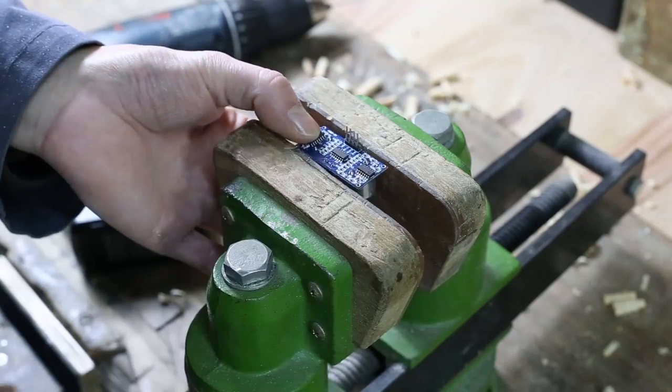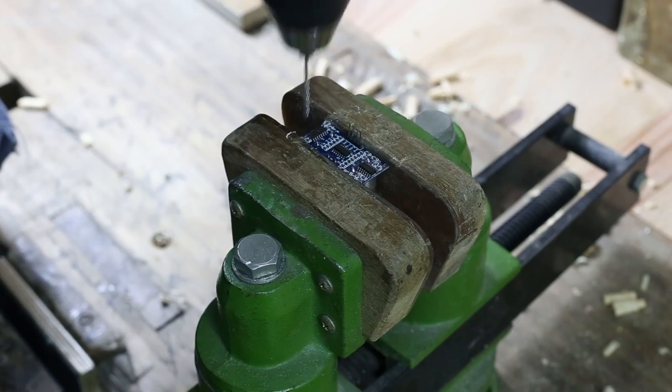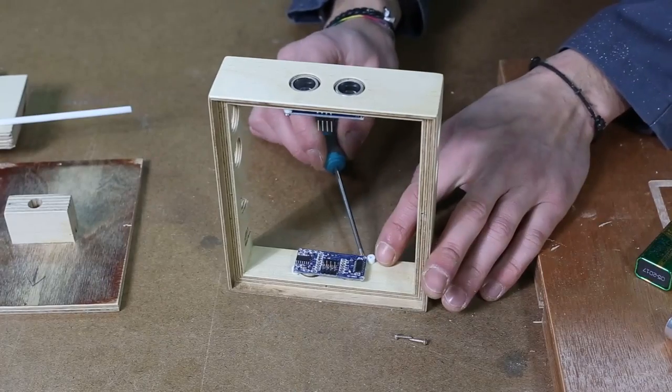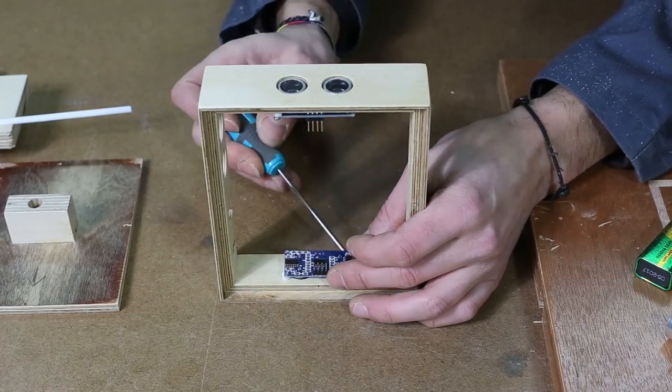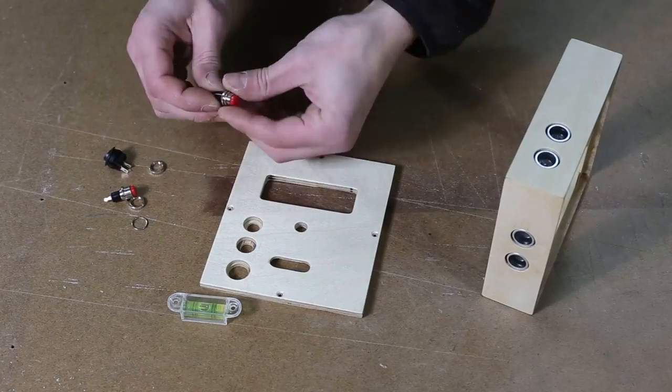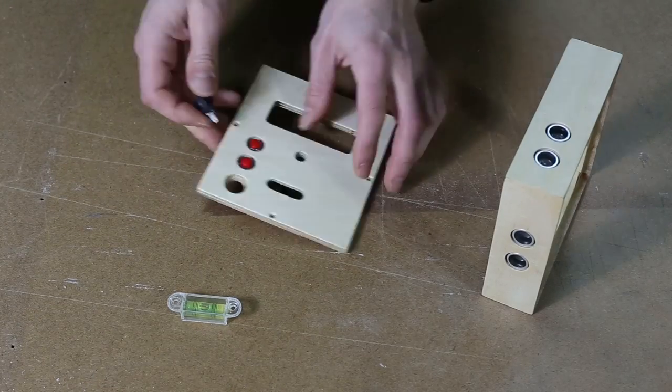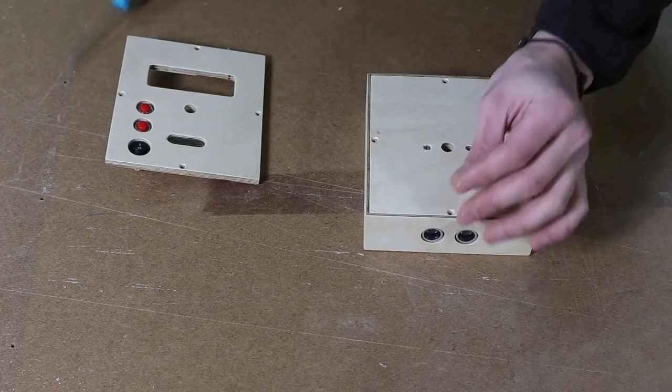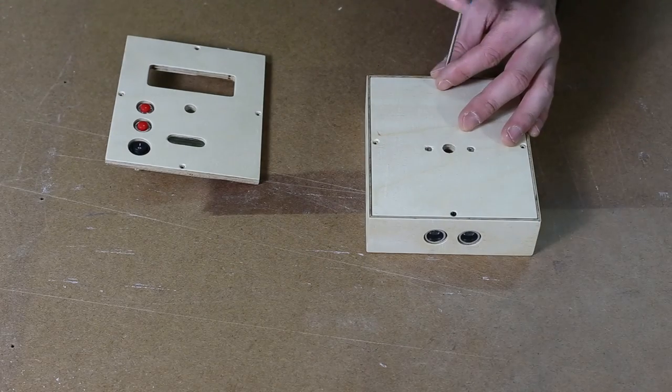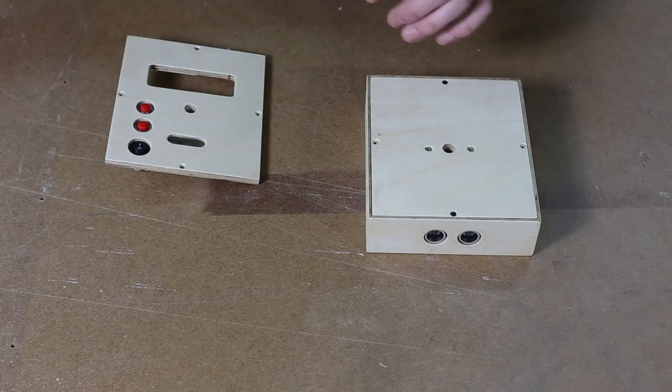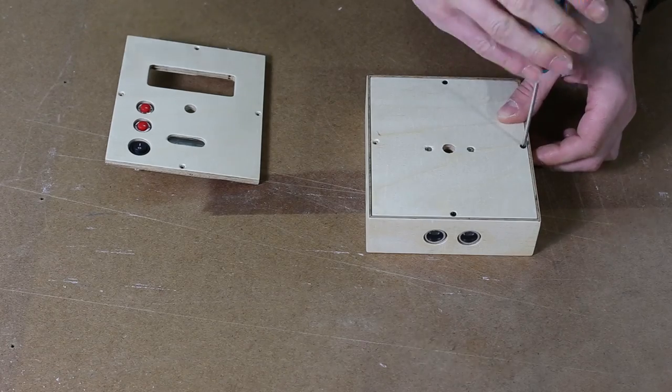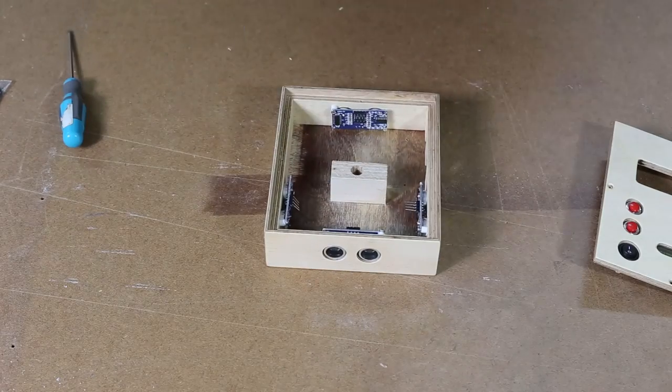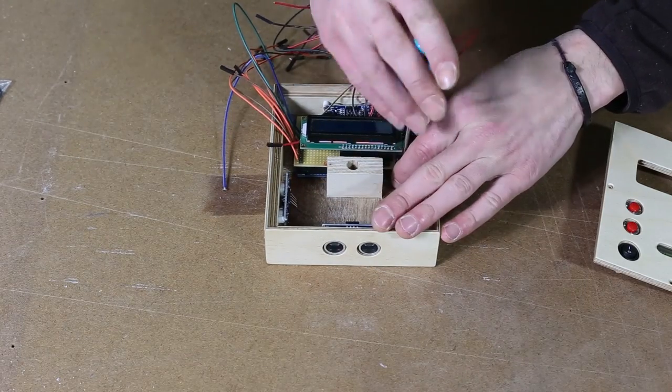I didn't have screws as small as the holes of the ultrasonic sensor, so I had to use the drill to make the holes bigger. With a little plastic pipe you can make these little spacers. Now assemble the buttons and the level. The Arduino with the board and the display and all the wires following the schematic.